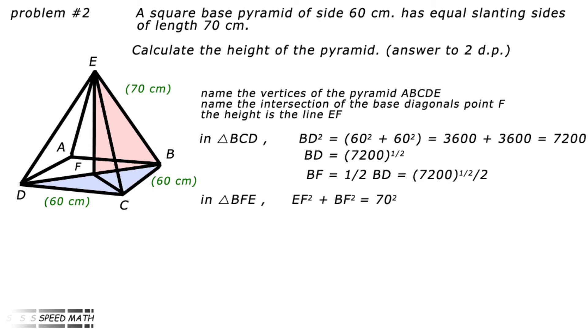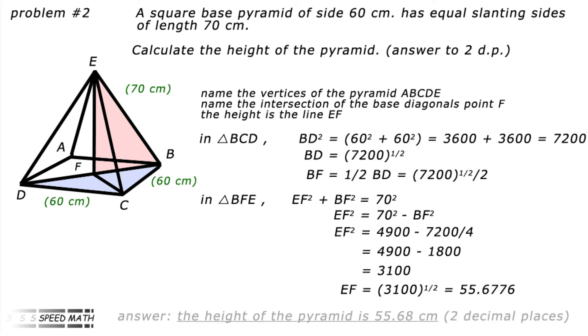In triangle BFE, EF squared plus BF squared equals 70 squared. So EF squared equals 70 squared minus BF squared. EF squared equals 4,900 minus 7,200 divided by 4 which gives us 4,900 minus 1,800 which equals 3,100. So EF is the square root of 3,100 which equals 55.676. So the answer is the height of the pyramid is 55.68 centimetres to two decimal places.